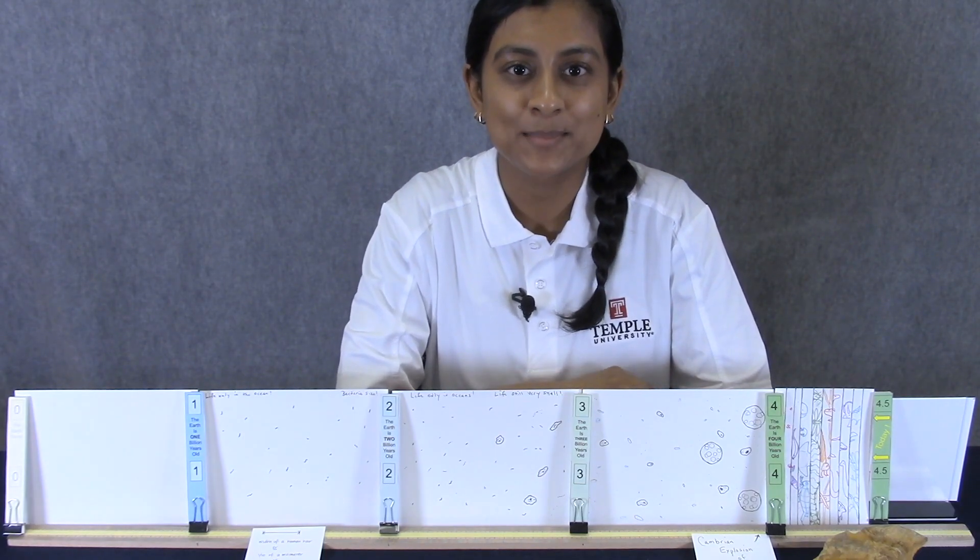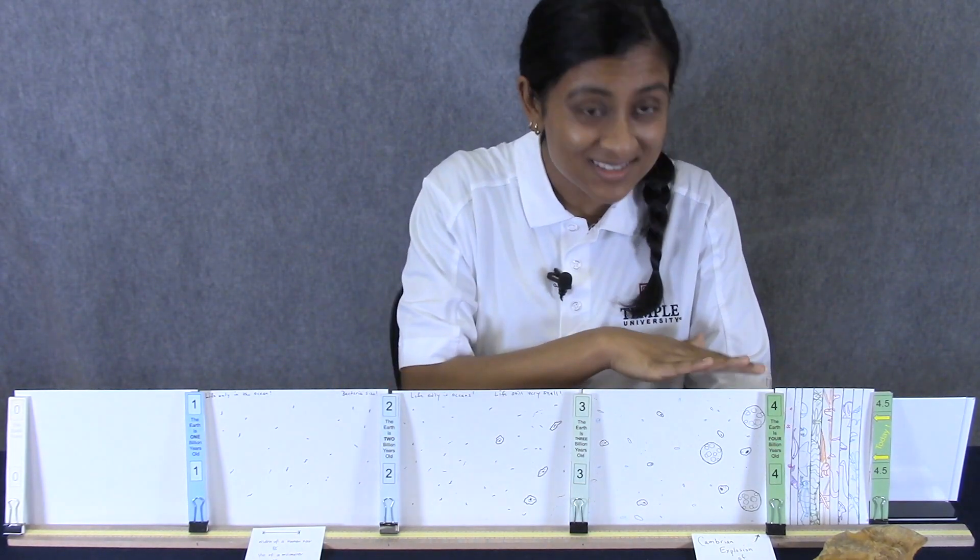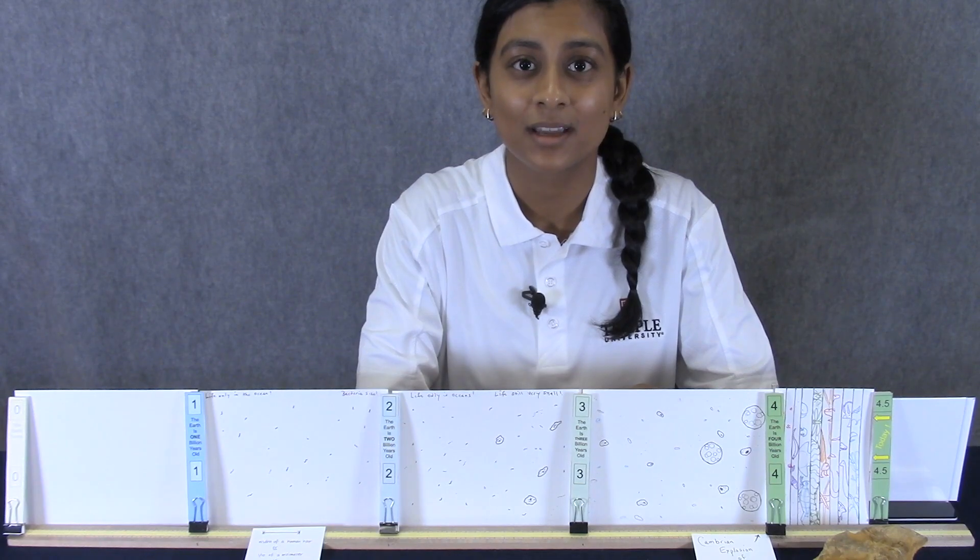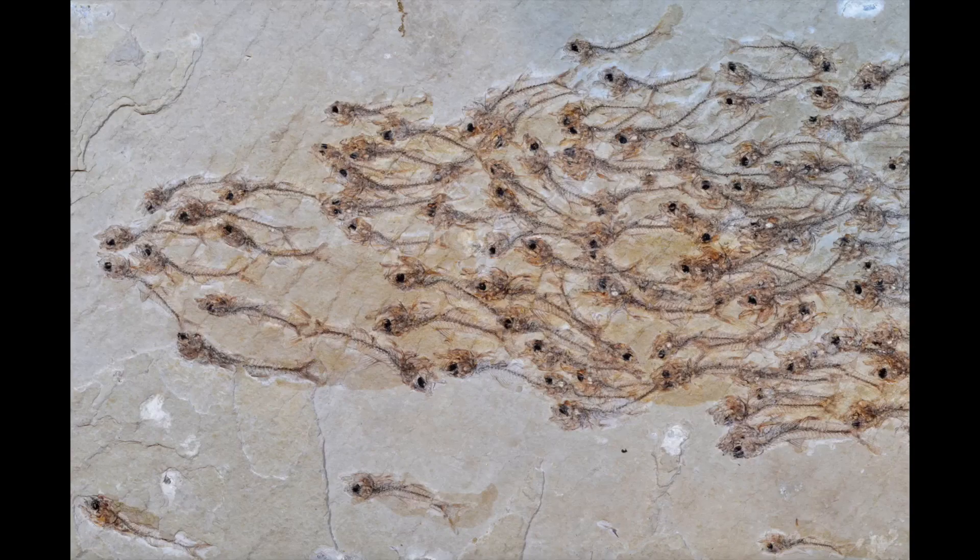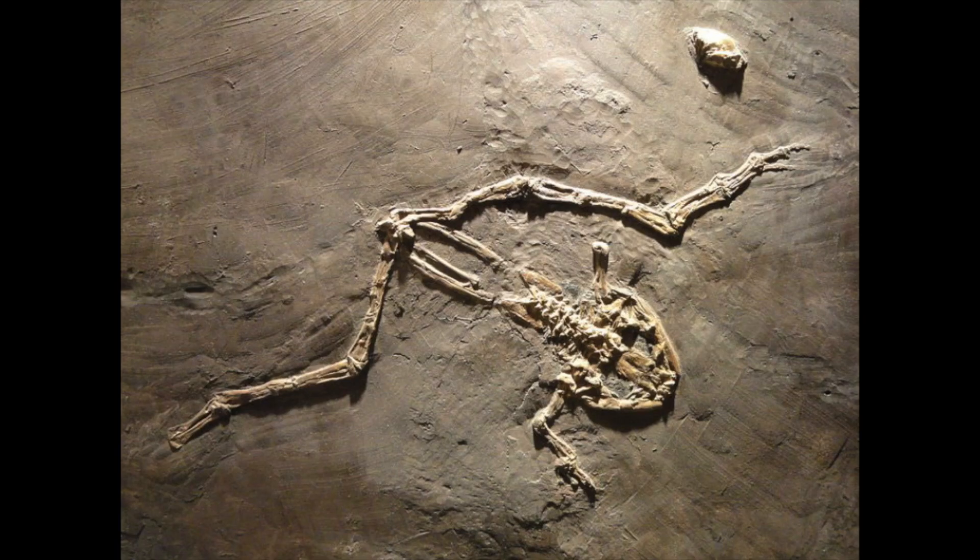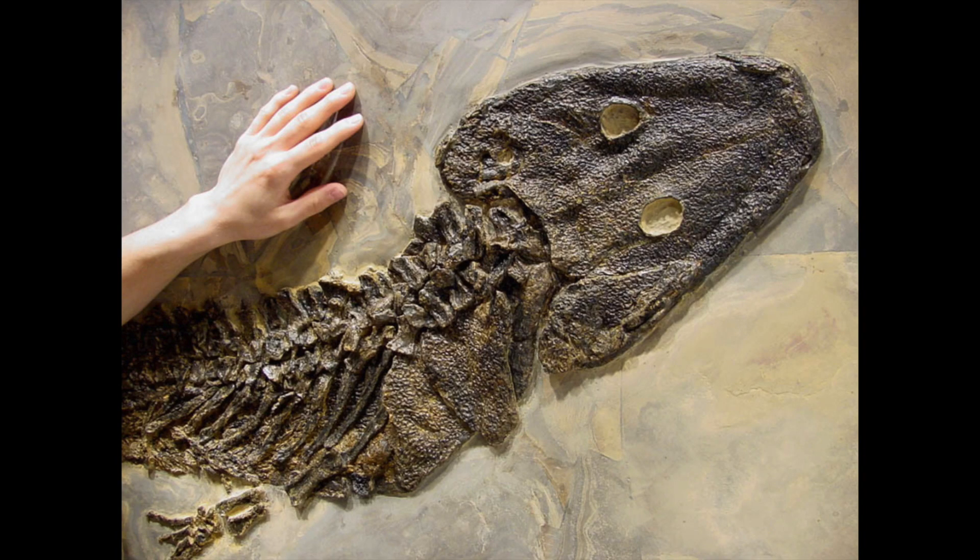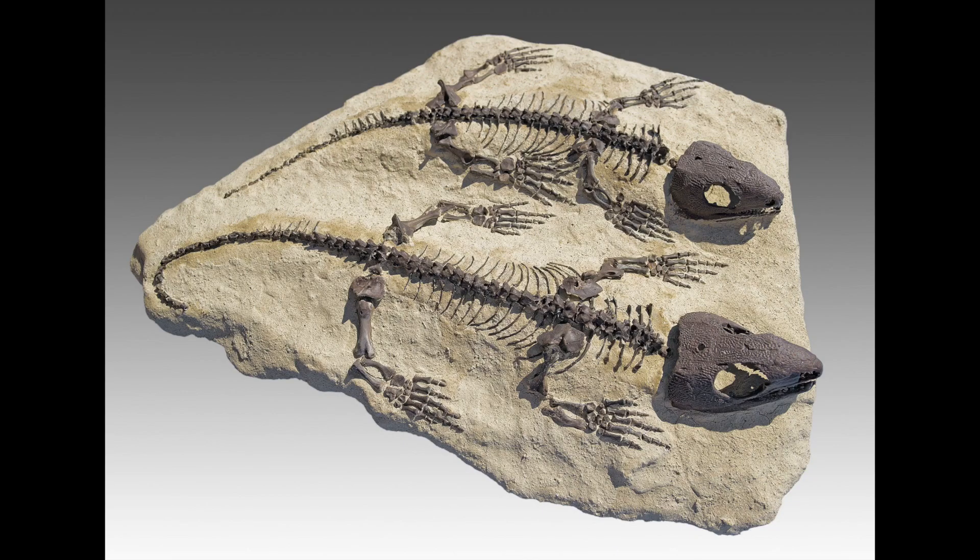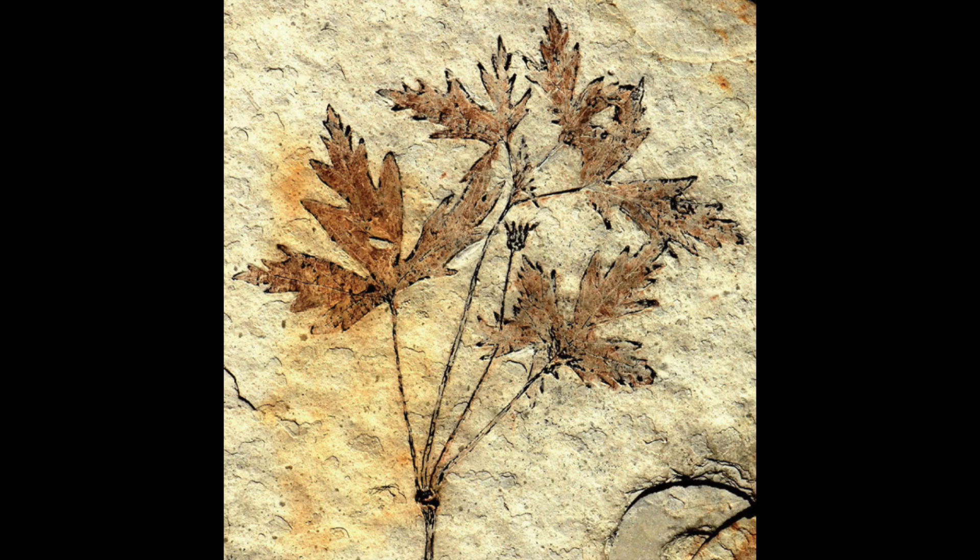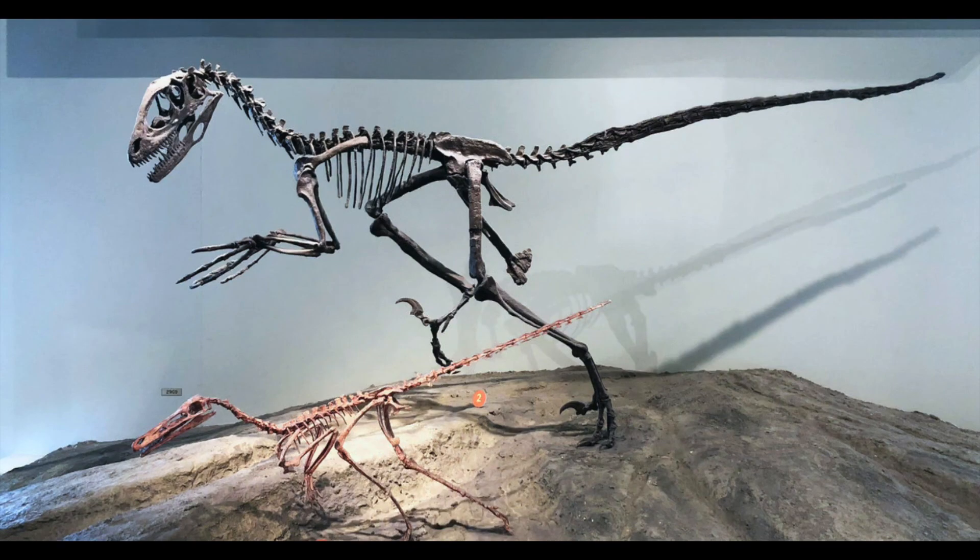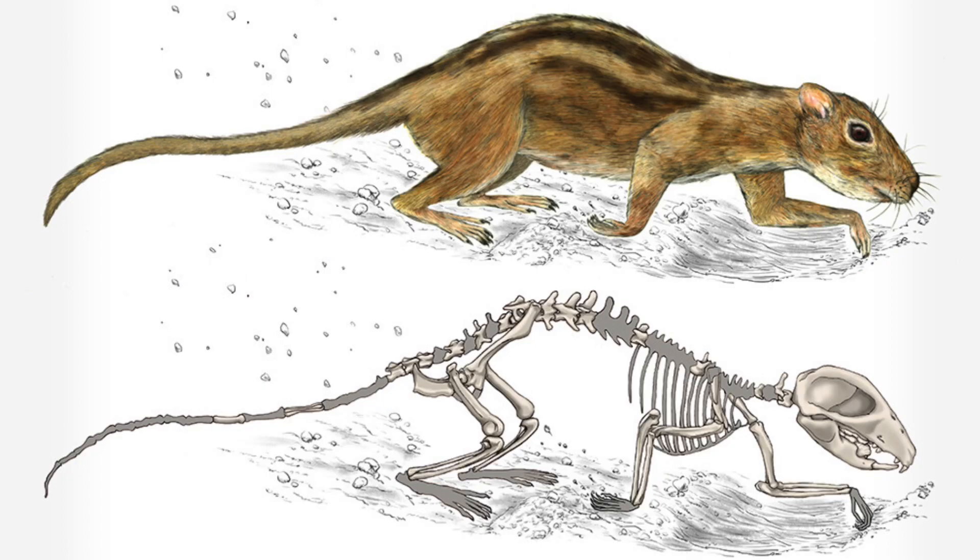Here are some of the different types of fossils that we've found since the Cambrian Explosion. Fish, amphibians, reptiles, land plants, dinosaurs, and mammals.